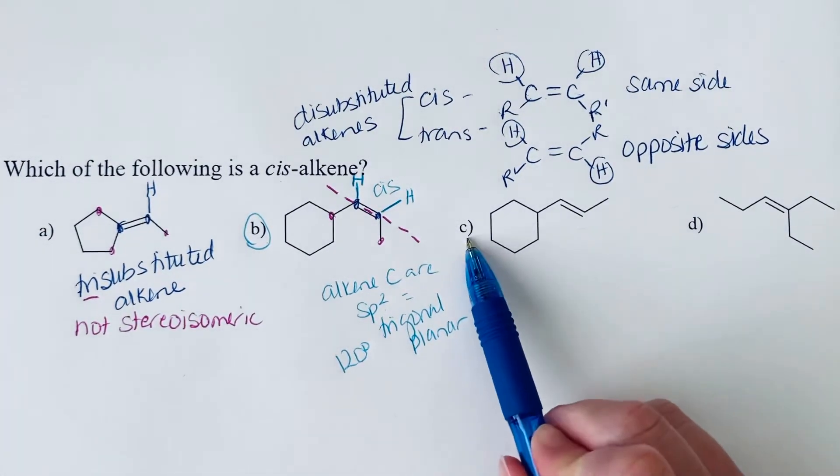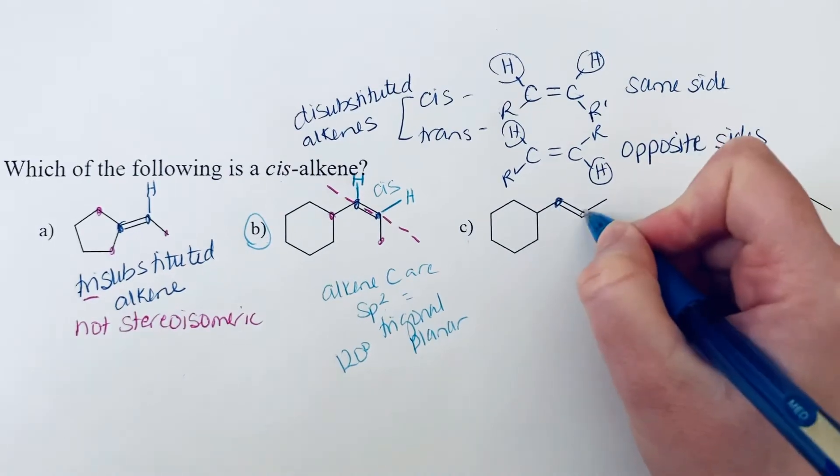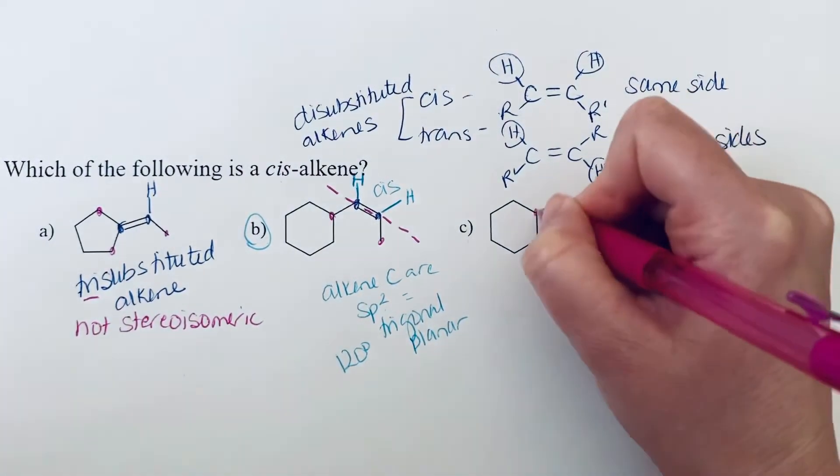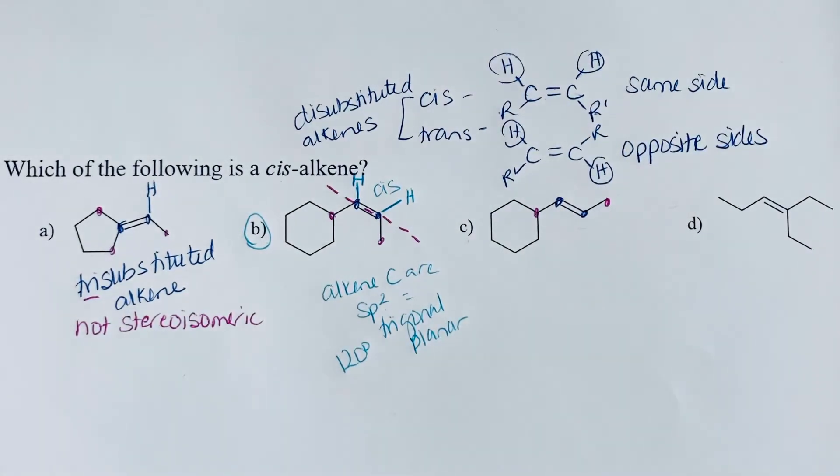And so if we look at C, here are alkene carbons. We have one, two bonds to substituents. So this is a di-substituted alkene. So it is possible that it could have cis or trans.